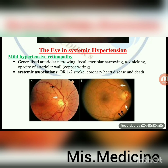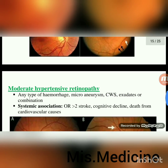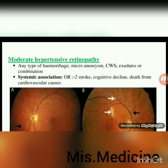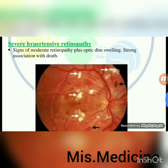The eye in systemic hypertension. Mild hypertensive retinopathy: generalised arterial narrowing, focal arterial narrowing, AV nicking, opacity of arterial wall (copper wiring); systemic associations include stroke, coronary heart disease and death. Moderate hypertensive retinopathy: any type of hemorrhage, microaneurysm, cotton wool spots, exudates or combination; systemic associations include stroke, cognitive decline, death from cardiovascular causes. Severe hypertensive retinopathy: signs of moderate retinopathy plus optic disc swelling; strong association with death.